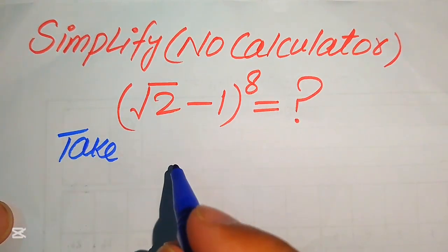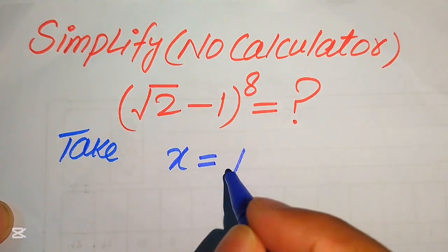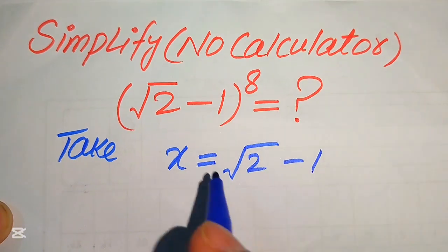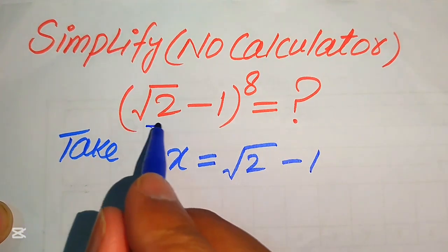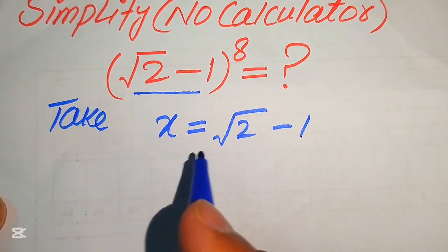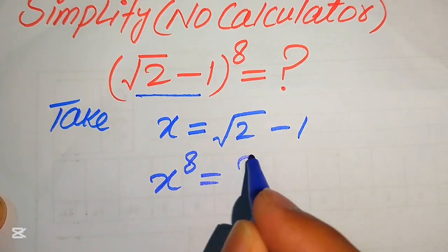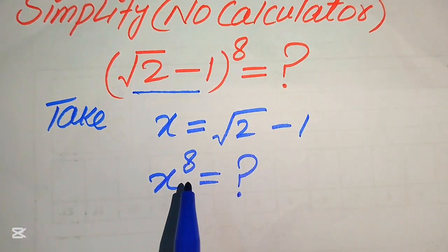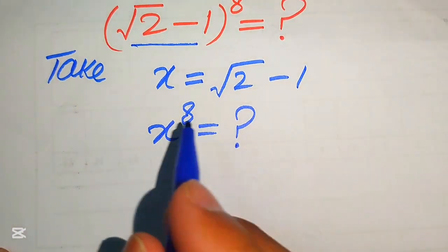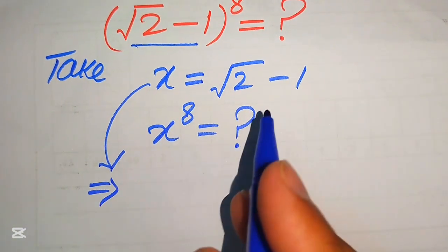The very first step is to take the base of this expression and set it equal to x, where x equals the square root of 2 minus 1. Our target is to find the value of x to the power of 8. So we need to simplify this equation.